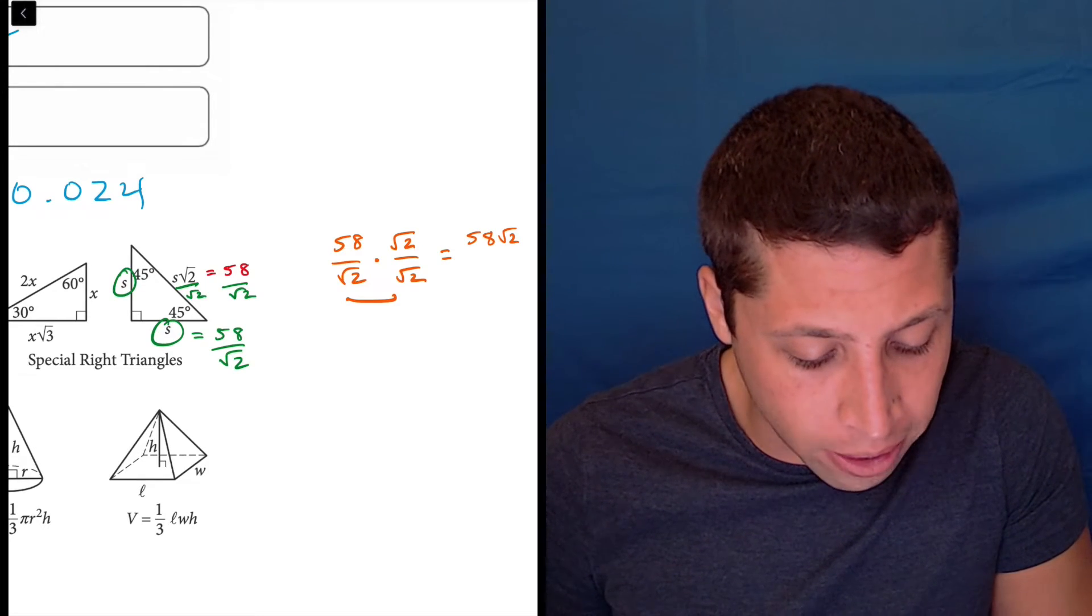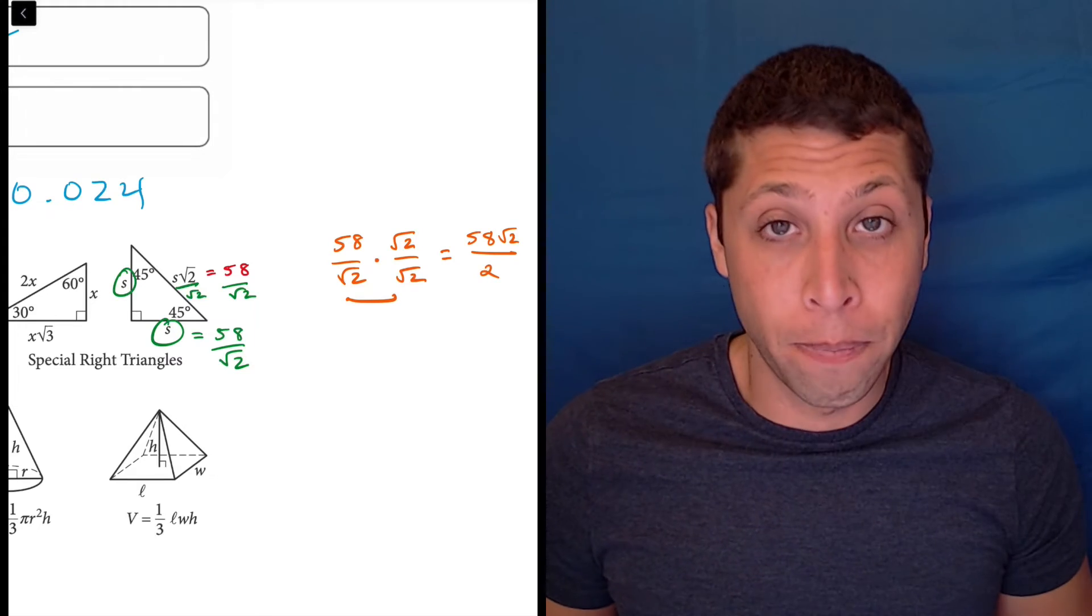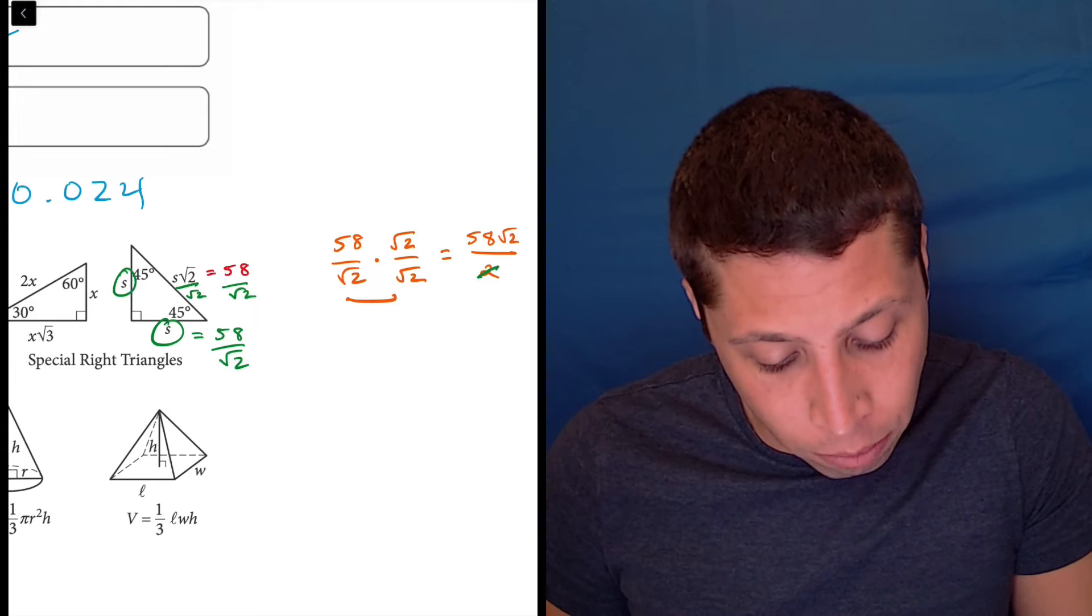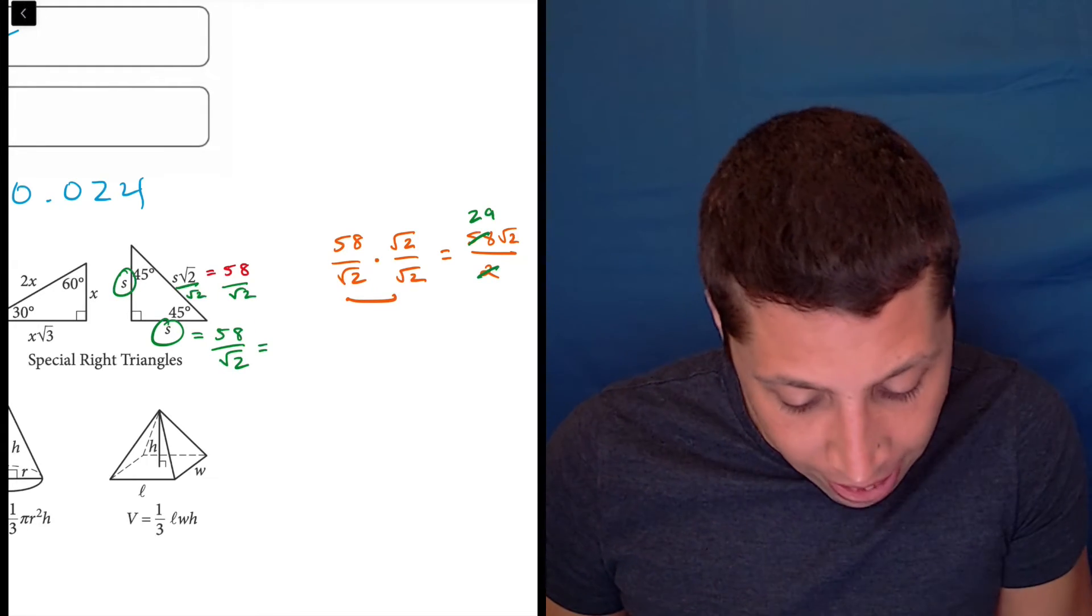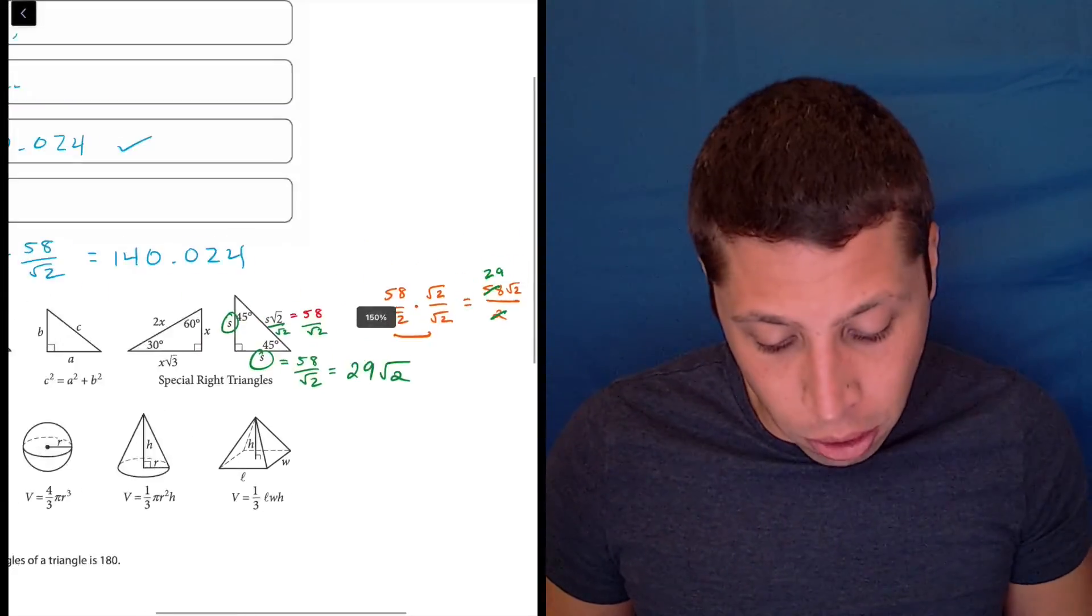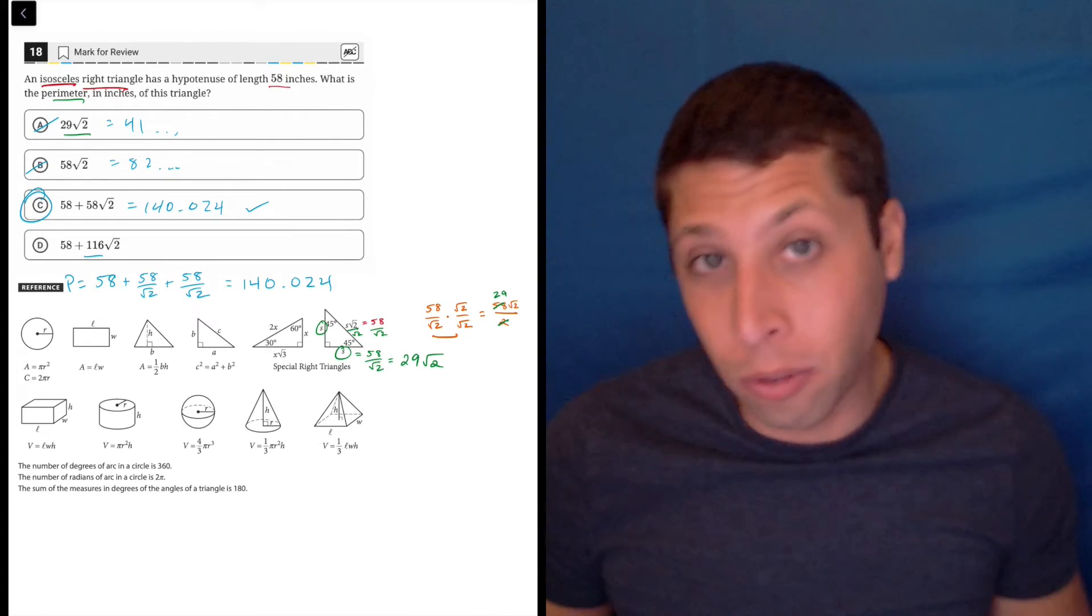58 root 2 is on the top, and root 2 times root 2 is just plain old 2. And then, this is usually going to happen on these questions, we can reduce the 2 with the 58, and that means that that side S was also equivalent to 29 times the square root of 2. And sure enough, notice what was choice A, 29 square root of 2.